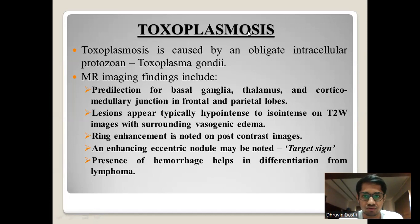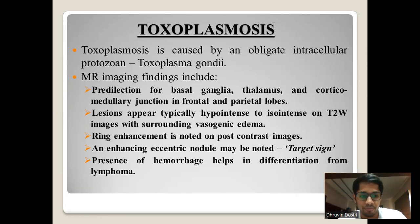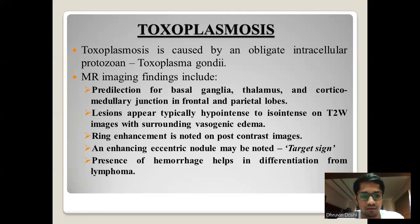The next disease is toxoplasmosis, caused by the obligate intracellular protozoa Toxoplasma gondii. On MRI, there is predilection for the basal ganglia, thalamus, and corticomedullary junction in frontal and parietal lobes. Lesions appear typically hypointense to isointense on T2-weighted images with surrounding vasogenic edema. Ring enhancement is noted on post-contrast studies, and an enhancing eccentric nodule may be seen — called the target sign. Presence of hemorrhage helps differentiate toxoplasmosis from lymphoma.